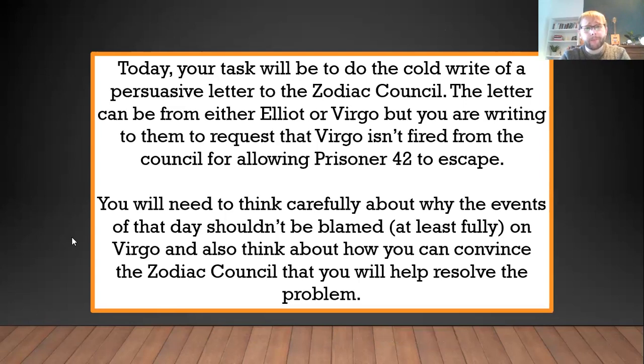So what you're going to be doing is you're going to be writing a cold write of a persuasive letter from either Virgo or Eliot to the Zodiac Council that we read in chapter nine. You can now read the rest of chapter nine. So Eliot or Virgo are writing to the Zodiac Council and they're asking that Virgo doesn't get fired. They're sort of begging, asking, trying to persuade the Zodiac Council not to fire Virgo. You can choose if you want to be Eliot or Virgo writing the letter. You're going to need to think really carefully about why the events on the day shouldn't be blamed, or at least shouldn't fully be blamed on Virgo. You also need to think about how you can convince the Council that you're going to help resolve the problem.